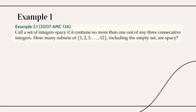Here's our first example taken from the 2007 AMC 12A. Call a set of integers spacy if it contains no more than one out of any three consecutive integers. How many subsets of {1, 2, 3, ..., 12}, including the empty set, are spacy? If you try techniques like casework or complement counting, they are extremely tedious and not entirely feasible because there are just so many cases — it gets incredibly messy and very easy to mess up. So we have to resort to recursion.